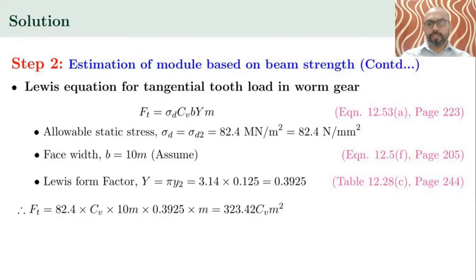The Lewis equation for tangential tooth load in the WAM gear (equation 12.53A, page 223) is FT = σd · CV · B · Y · M. Here σd = σD2 = 82.4 N/mm², face width B = 10M (from equation 12.5F, page 205), and the Lewis form factor Y = π·y2, where y2 = 0.125 (from table 12.28C, page 244), giving Y = 0.3925.